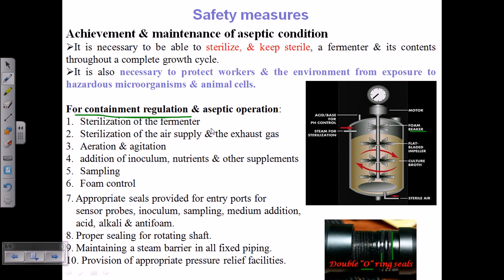These are the major requirements that, when fulfilled, give us a proper and effective fermenter for industrial microbiology. Most importantly, if you are running an industry, you must protect your workers and the environment from any exposure to hazardous microorganisms or animal cells. Maintaining sterile and containment-regulated conditions is essential. That's it — I hope this helps you understand what an industrial fermenter looks like, what it is made of, and what must be maintained for optimal performance.